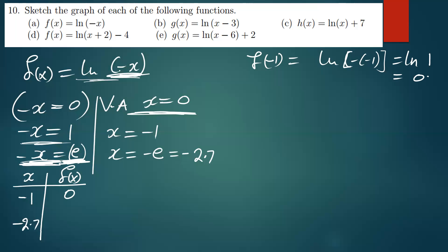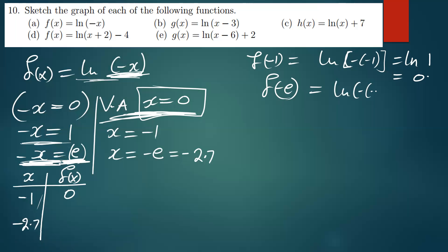When x is zero, that's the vertical asymptote — we don't find an f-value there, just draw it as a line. When x is negative e, f(negative e) = ln(negative × negative e) = ln(e), and ln(e) equals one. So we put one in the table.